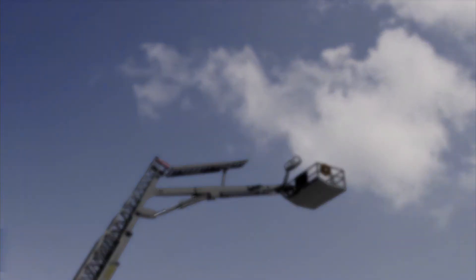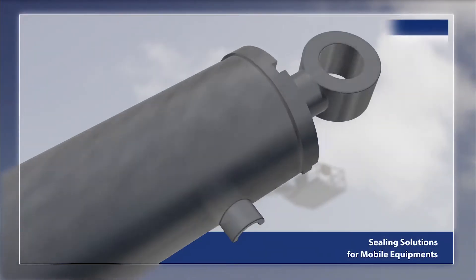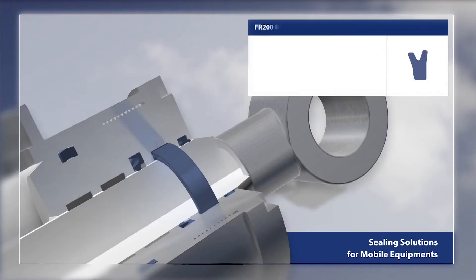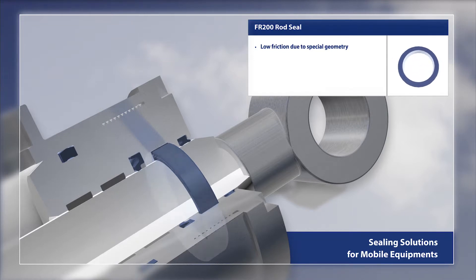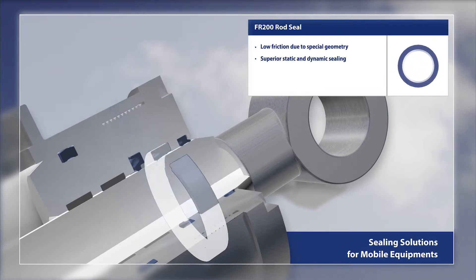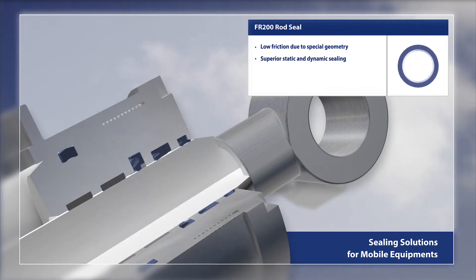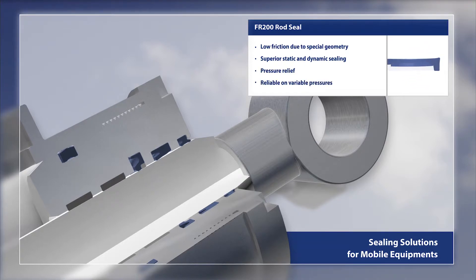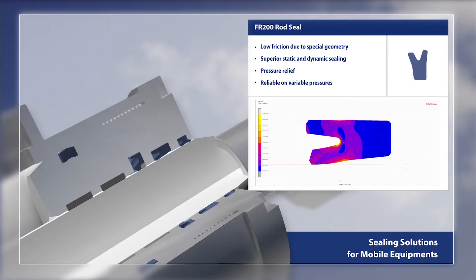The reference ceiling configurations for platform lifts consist of the FR200 rod seal. Low friction due to special geometry. Superior static and dynamic ceiling. Pressure relief. Reliable on variable pressures.